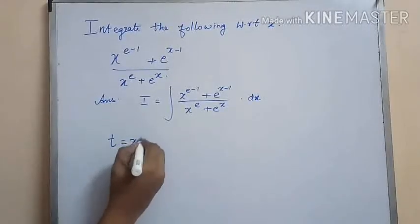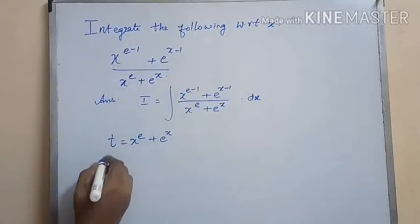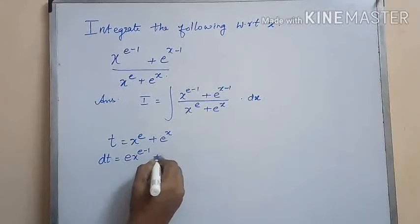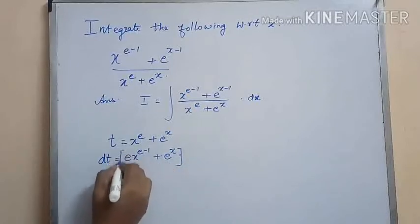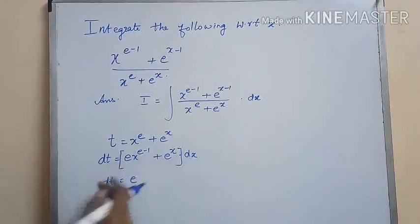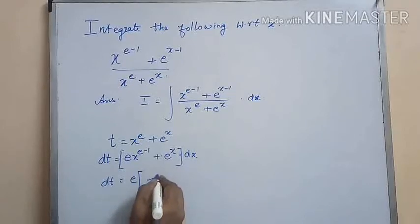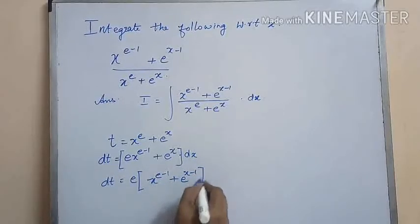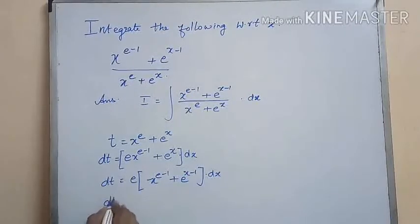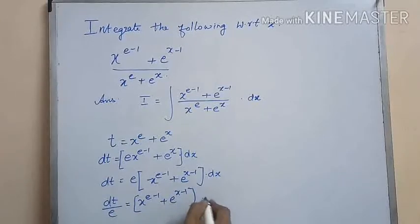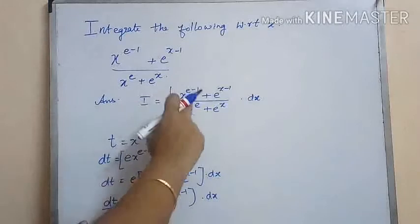The next problem for today's session is: integrate x to the power of e minus 1 plus e to the power of x minus 1, divided by x to the power of e plus e to the power of x. Let us substitute t equal to x to the power of e plus e to the power of x. Differentiating, we get dt equal to e into x to the power of e minus 1 plus e to the power of x minus 1 into dx, so dt by e equals x to the power of e minus 1 plus e to the power of x minus 1 into dx.